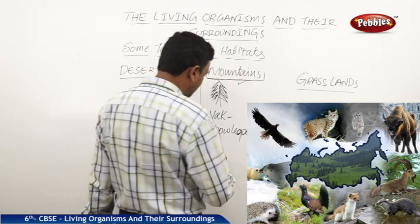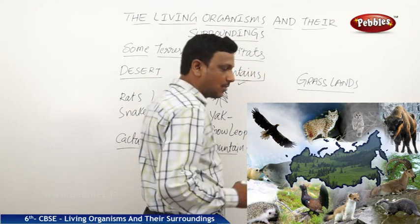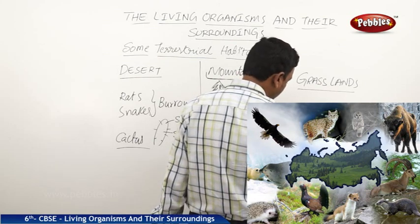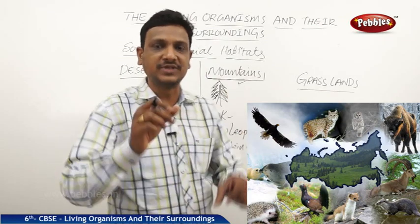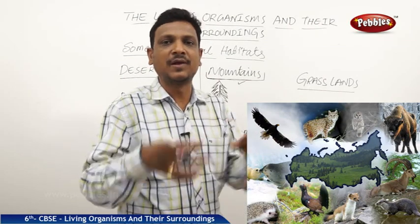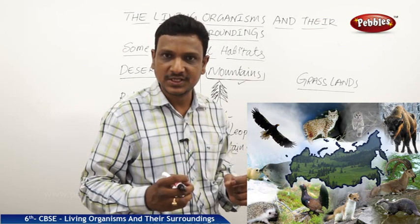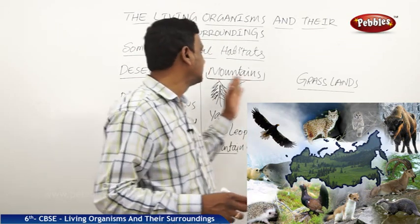And we see the mountain goat. The mountain goat has got very strong hooves. These strong hooves allow it to climb rocky mountains. To climb rocky mountains, it needs very strong hooves. These hooves help the goat to climb the rocks. So that kind of adaptation is seen in mountain animals.